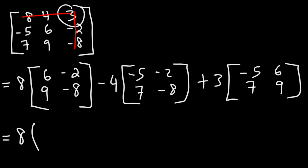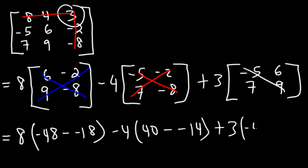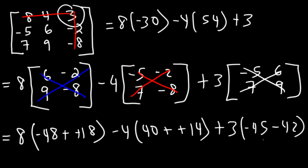Now let's evaluate the determinant of each 2x2 matrix. We have 6 times negative 8, which is negative 48, and then minus 9 times negative 2, which is negative 18, and then minus 4. Here we have negative 5 times negative 8, that's positive 40, minus 7 times negative 2, which is negative 14, and then plus 3. And then negative 5 times 9 is negative 45, minus 7 times 6, which is 42. So this is going to be negative 48 plus 18, which is negative 30, and then minus 4. 40 plus 14 is 54. And then plus 3: negative 45 minus 42 is negative 87.